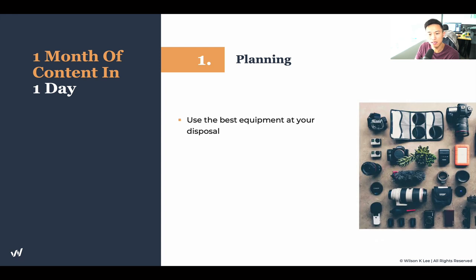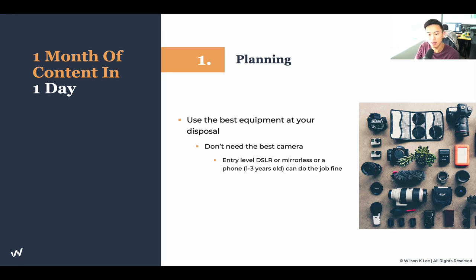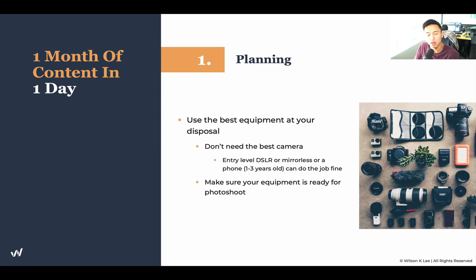Next up is to use the best equipment at your disposal. Now that we've figured out the plan, the different mood boards, the inspiration, the shot list, and the props, it is time to make sure we have all the equipment we need. You don't need the best $1,000 cameras. If you have an entry-level DSLR, or even a mirrorless camera, or even a smartphone, they can all do the job quite fine. Use whatever you have at your disposal. Make sure your equipment is ready the day before the photo shoot, with all batteries fully charged. It is so crucial.